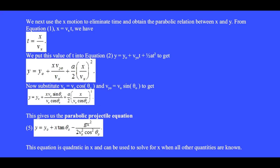We next use the x-motion to eliminate time and obtain the parabolic relation between x and y. From equation 1, we take t and put it into these two spots of equation 2 to get this equation.